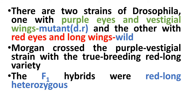There are two strains of Drosophila: one with purple eye and vestigial wings, and the other with red eyes and long wings. The purple eye and vestigial wings are the same as the mutant — this is the same as the double-recessive condition.